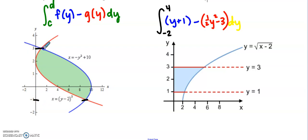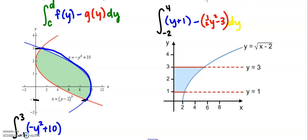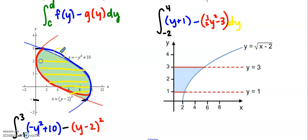For the next example, we reference y values from y = -1 to y = 3. The right curve is already in terms of y: -y² + 10. Minus the left curve, also already in terms of y: (y - 2)². We're painting perpendicular to the y-axis, so dy.